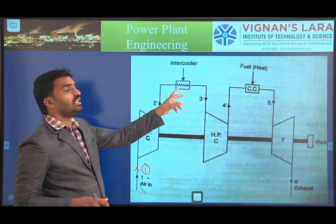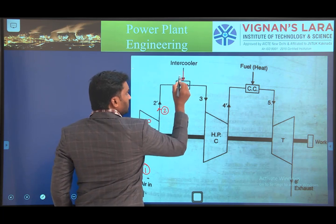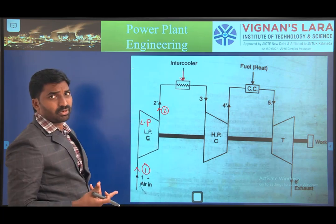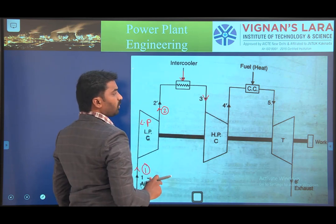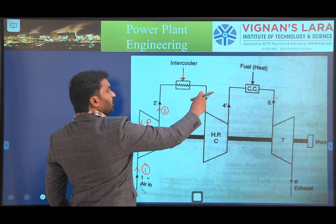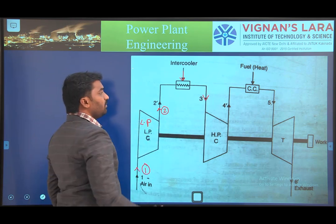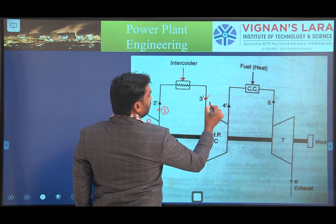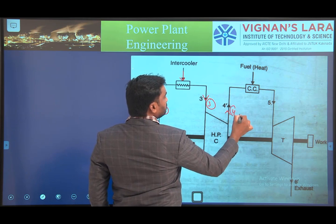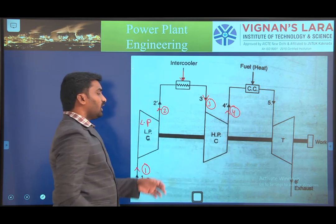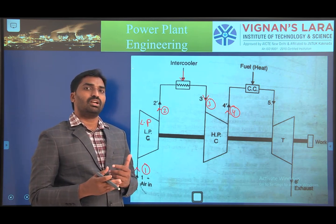After the intercooler process, the same compressed air is sent into the high pressure compressor — this is state 3 — resulting in state 4. After the high pressure compressor, we get lower temperature but more pressure compared to using a single normal compressor. Using two-stage compression gives a higher overall pressure than a single compressor stage.